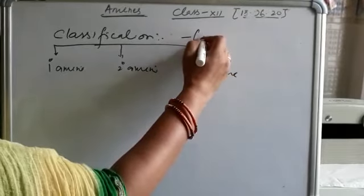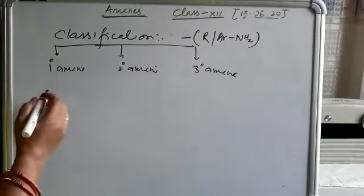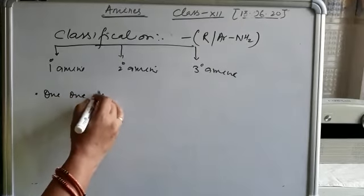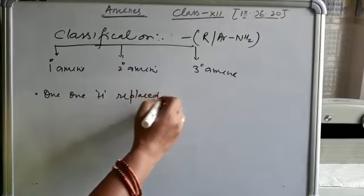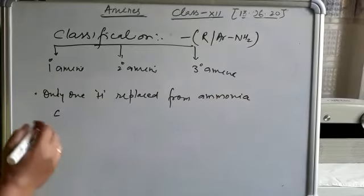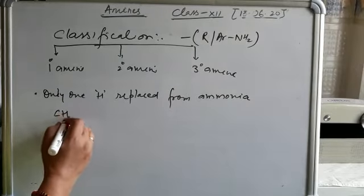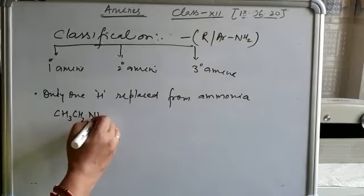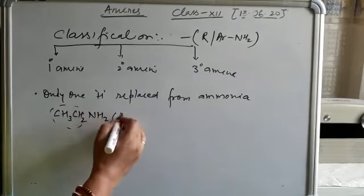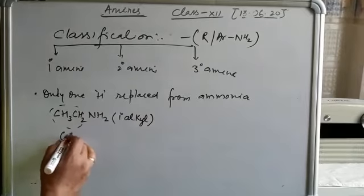It may be alkyl or aryl amine. As we studied earlier, when only one hydrogen is replaced from ammonia — for example, one hydrogen atom replaced by an alkyl group such as CH3NH2 — it is a first-degree alkyl amine.